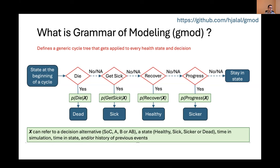In grammar modeling, you have a generic cycle tree. You start at the beginning of the cycle and go through the events — regardless of what your state is or what strategy you are under, this same sequence gets applied everywhere. You have a die event: if it happens, you end up in the death state. If get sick happens, you end up in sick. If none of these are applicable — for example, if somebody is already dead, they won't have a die event — you consider the next event. If recover happens, you go to healthy. If progress happens, you go to the sicker state. If none of these things happen, you stay where you started from.